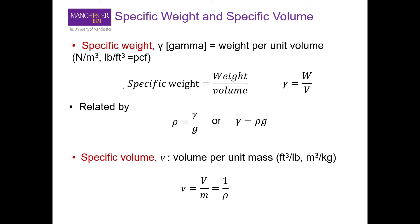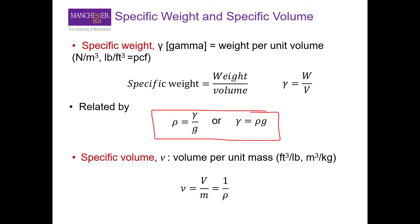Related to density, there are some other terms you might see in textbooks. We have specific weight, represented by gamma, which is the weight per unit volume — so instead of mass you have weight per unit volume — and you can relate density with specific weight using that equation. Another related term is specific volume, which is the volume per unit mass, and as you can clearly see it is just the reciprocal of density.